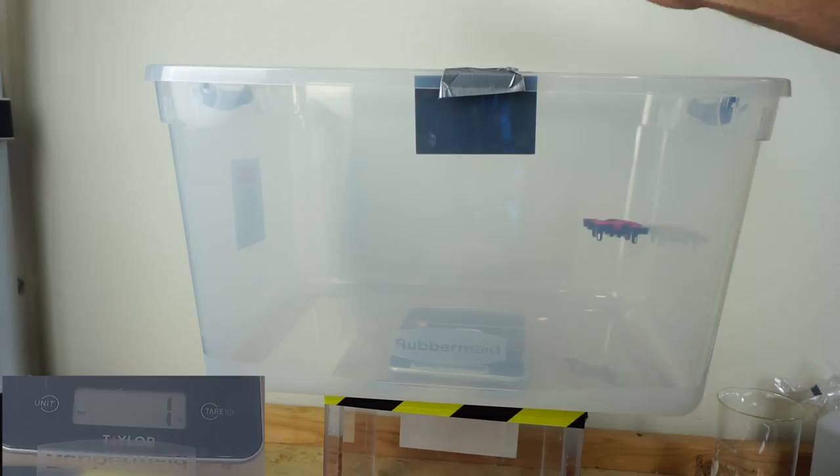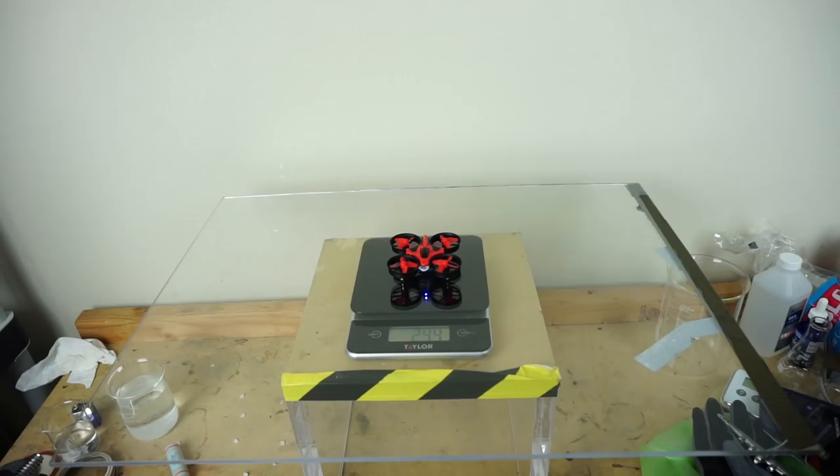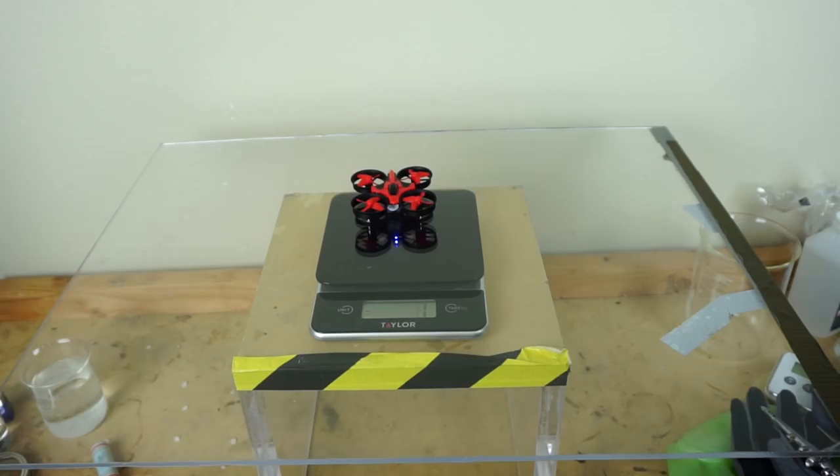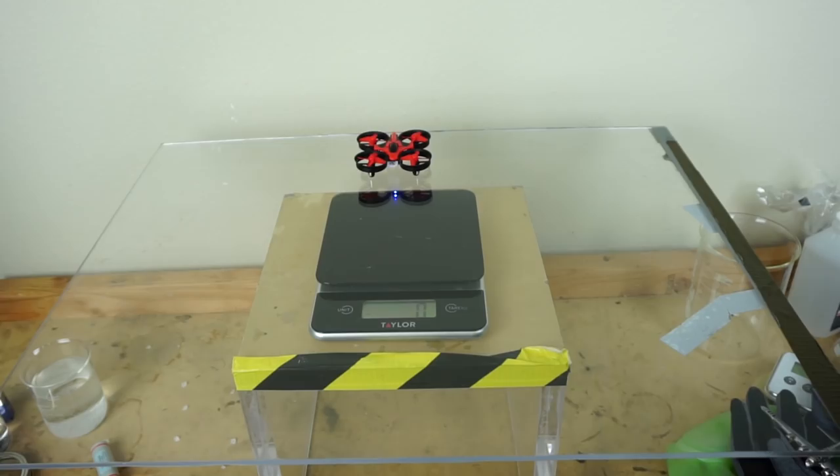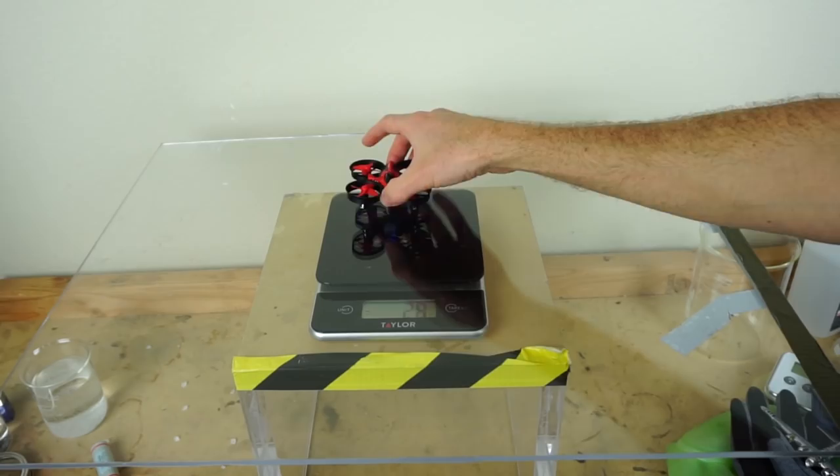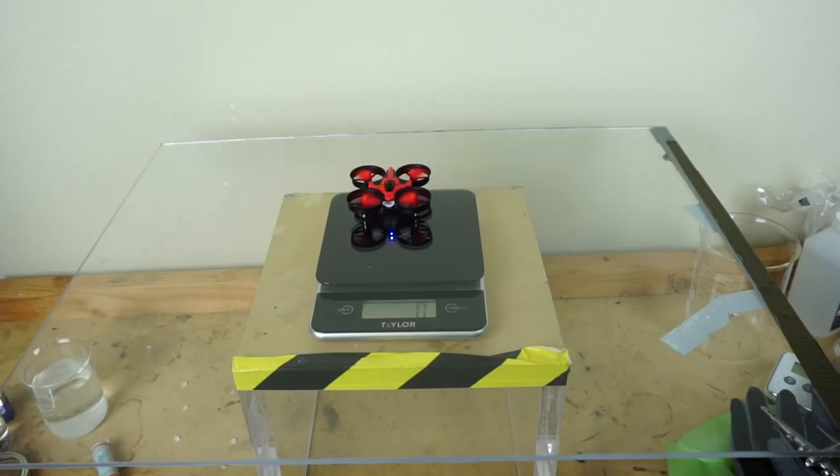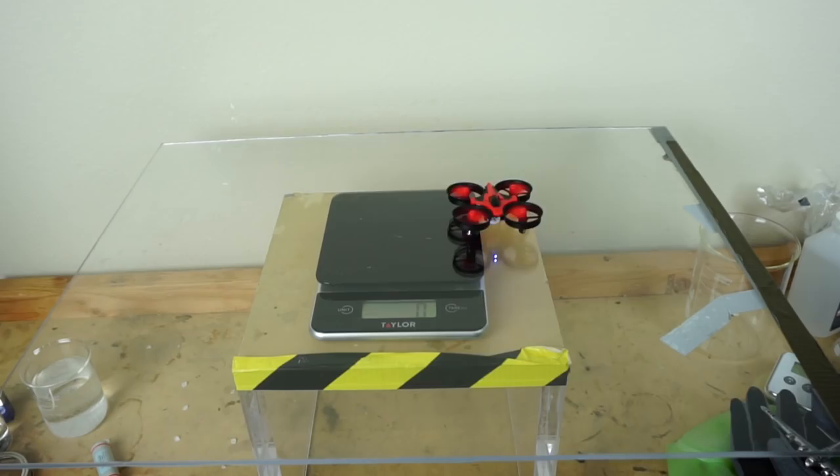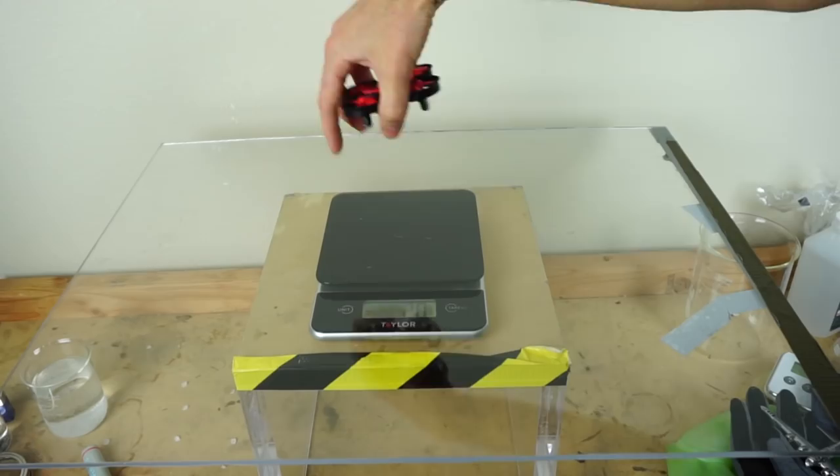Now with no sides at all, let's see what happens. We're zeroed. Let's give it a fly. Here we go. Zero. Zero. That's crazy, it doesn't even need sides or a lid. What's crazy is if I catch it in the air and turn it off, the weight returns. But when I turn it on and then let it go, it goes back to zero.